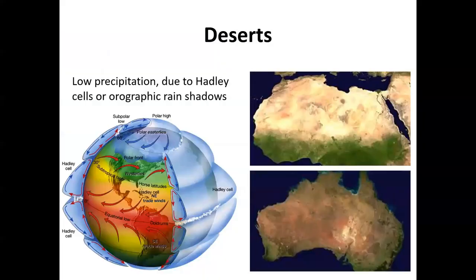Deserts are areas of low precipitation on Earth's surface, and they're driven by two major things. For the most part, these areas of low precipitation are driven by global circulation patterns called Hadley cells, or by places where mountains force rain upward and dump out all that rain, so the air moving across those mountains is dry. On the leeward side of those mountains, we have what are called orographic rain shadows.